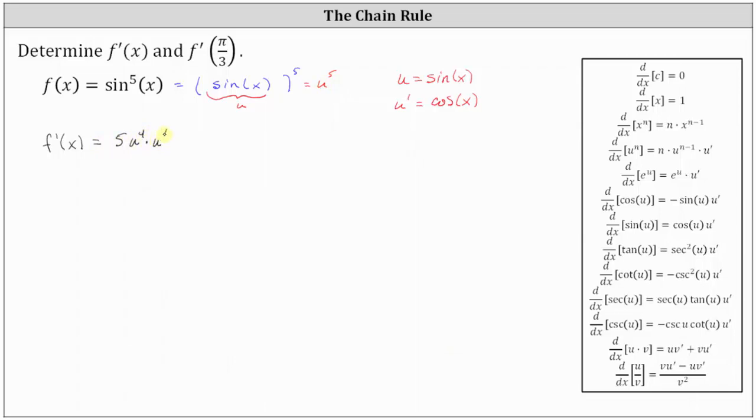But of course, we want the derivative in terms of x, which gives us five times the fourth power of sine x times cosine x. Let's go ahead and rewrite this as f prime of x equals five cosine x times sine to the fourth x. So this is our derivative function.